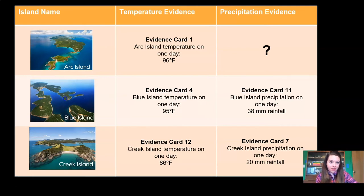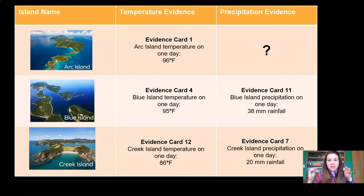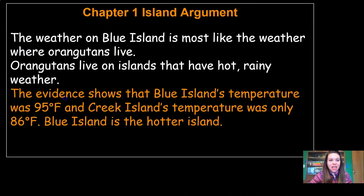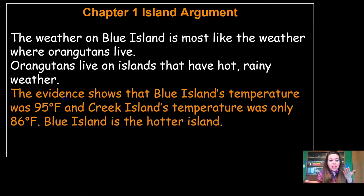Remember that we don't have enough evidence for Arc Island, so we want to jump into our evidence for Blue Island. We're going to pull that piece of temperature evidence — 95 degrees — and that piece of precipitation evidence — 38 millimeters — and put them into our argument. The evidence shows that Blue Island's temperature was 95 degrees and Creek Island's temperature was only 86 degrees. Blue Island is the hotter island. That's a really solid, convincing piece of evidence — two measurements taken the same way. That's really strong.